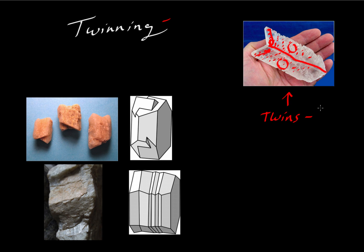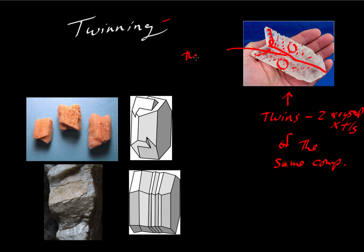Essentially, with twins you have two crystals of the same composition that are touching one another in contact along what is called the twin plane — that's the plane of separation where the two twins come into contact.